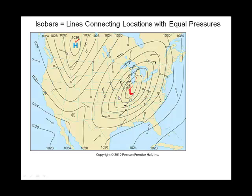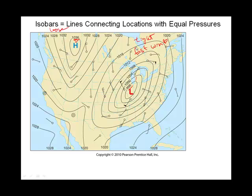Now turning our attention to the central high pressure: the units are millibars, so 1,036 millibars at the center, then 1,032, then 1,028 — a difference of four millibars each time. We have tight isobars in one area and loose isobars in another, so we would expect fast wind where the isobars are tight and not-so-fast wind where they are loose.